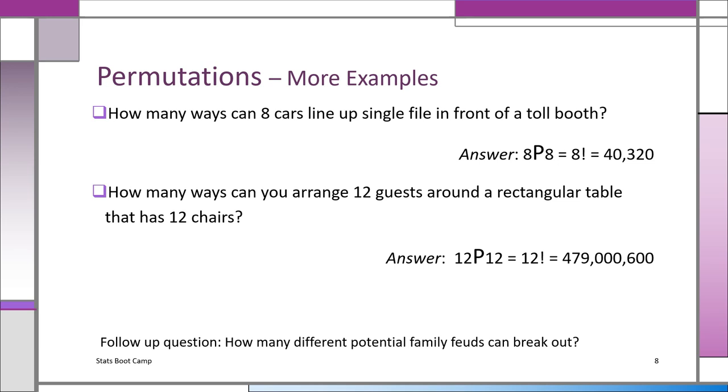Example three. How many ways can eight cars line up single file in front of a toll booth? Again, we're assuming there's space for eight. So it's eight, permutation eight, because there are eight spaces and there are eight cars, which is 8 factorial, which is 40,320.